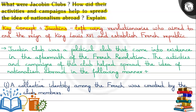Who were Jacobins? They were left-wing revolutionaries who had the aim of ending King Louis XVI's reign in France and bringing France to a republic. The Jacobin Club was a political club which existed in the aftermath of the French Revolution, and its activities and campaigns helped to spread the idea of nationalism abroad in the following manner.